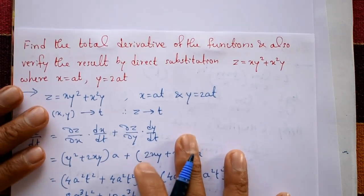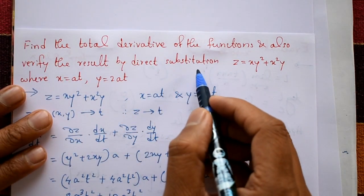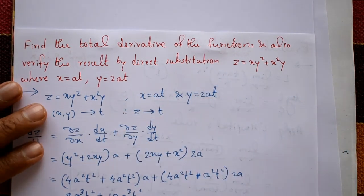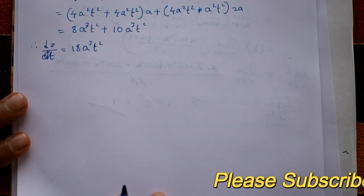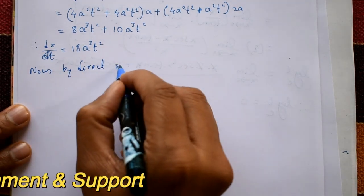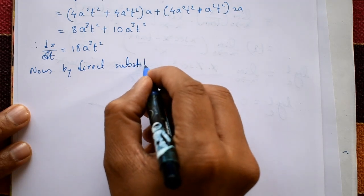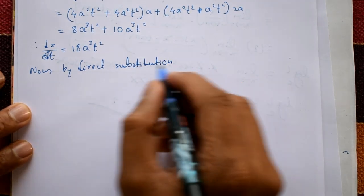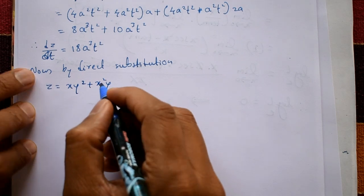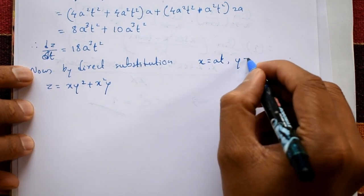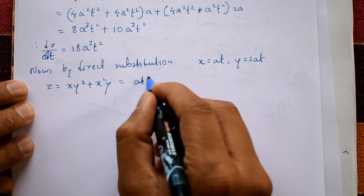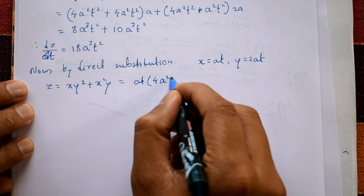Now we verify the result by direct substitution. Taking z = xy² + x²y, substitute x = at and y = 2at. So z = (at)(2at)² + (at)²(2at). We get x·y² = (at)·(4a²t²) = 4a³t³.